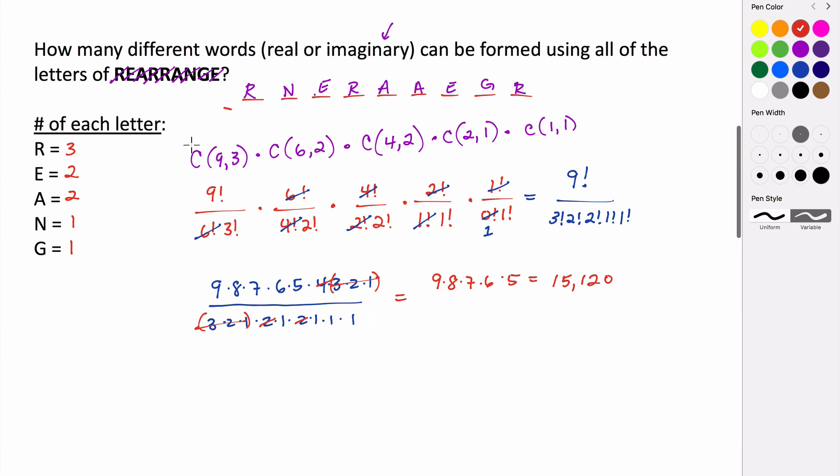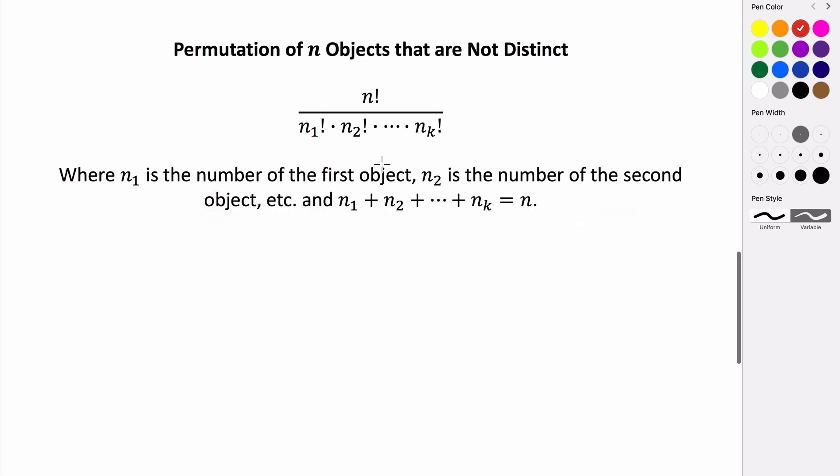So if we look here, we had 3 R's, we ended up with 3 factorial. We had 2 E's, we ended up with 2 factorial. 2 A's, 1 N, 1 G. And that gave us all of our factorials in the denominator. And that was that formula there.